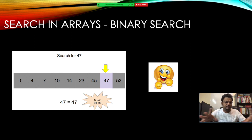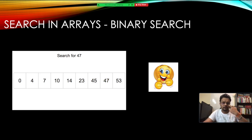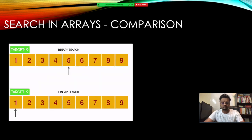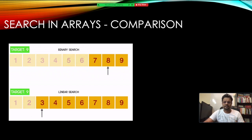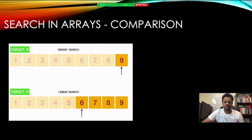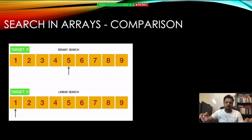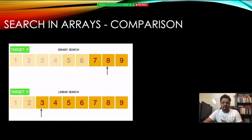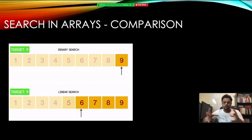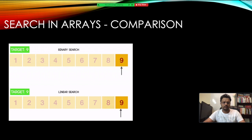Binary search gets used in all APIs in languages like collections.binarySearch and Arrays.binarySearch. On screen you can see the comparison: the top algorithm is binary search and the bottom is linear search. We're trying to find element 9 — linear search goes one by one, but binary search keeps reducing the search range and finds it much faster. That's the power of binary search.